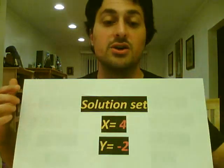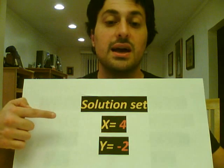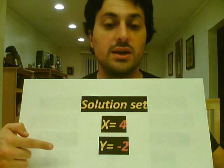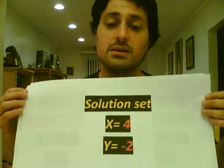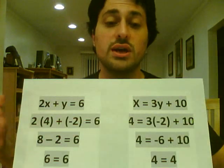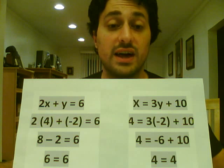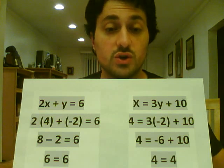There you have it, guys. Our solution set for this is x equals 4 and y equals negative 2. And if you want to check your answer, all you got to do is plug in the newfound values into the original equations.